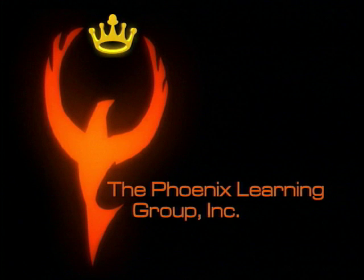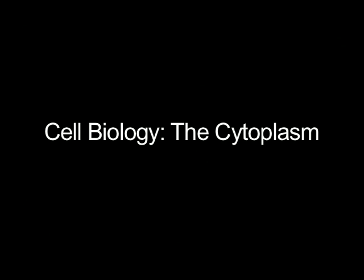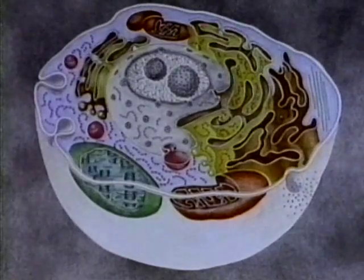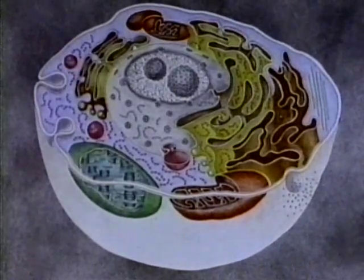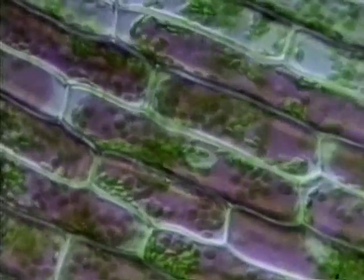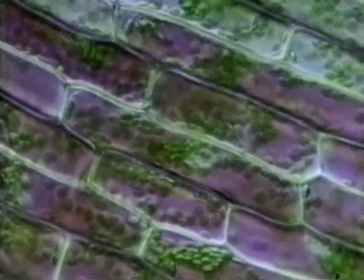Cytoplasm is that part of a cell within the plasma membrane, but not including its nucleus. This is the cytoplasm. Cytoplasm is made up of a watery fluid, the cytosol, containing the cell's supply of dissolved material.